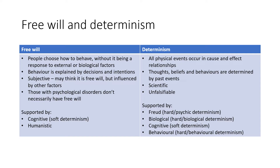Moving on to free will and determinism. Free will is when people choose how to behave without responding to external or biological factors — behavior is explained by decisions and intentions. However, it is subjective because an individual may think they're acting on their free will but actually be influenced by other factors. Also, those with psychological disorders don't necessarily have free will. The approaches that follow the idea of free will are cognitive — though as a form of soft determinism — and humanistic.